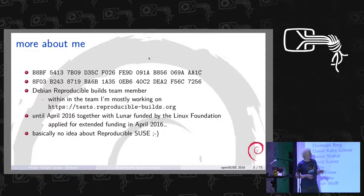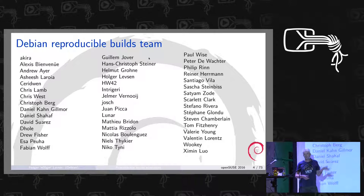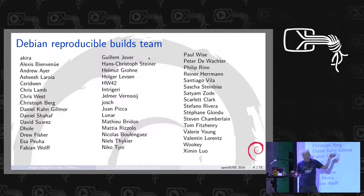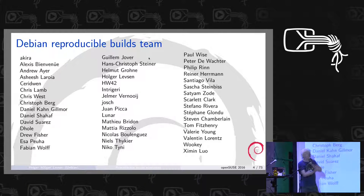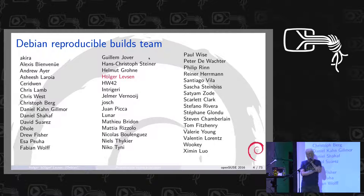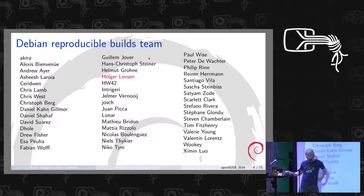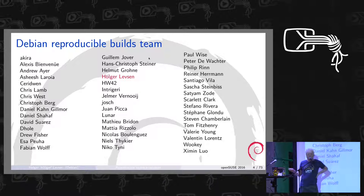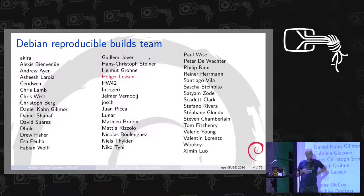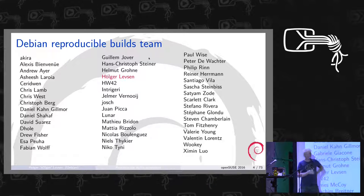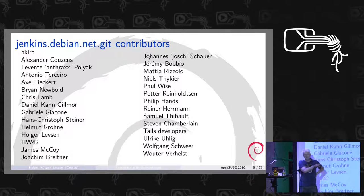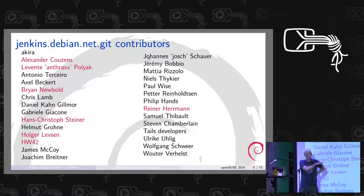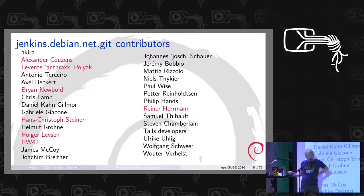I'm presenting the work of all these people — I'm just one of them. There are many people who have worked on this. We have a Jenkins setup for testing, and these are the contributors to the Debian Jenkins. Many of the contributors in red are not from Debian — they contributed to this Debian testing infrastructure. So it's really a cross-distro project by now.